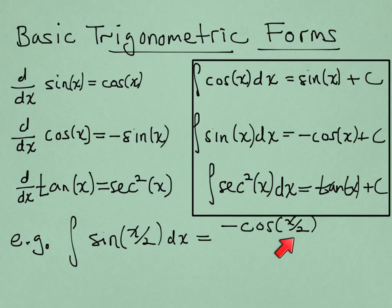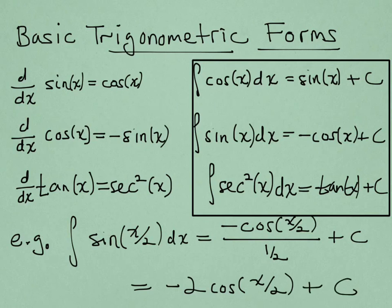Moreover, because I have x over 2 inside, the chain rule would say I need a factor of 1 half when I differentiate. I don't want that because there's no factor of 1 half over here, so I'm going to cancel it out by dividing by 1 half. Let's simplify that now. If I divide by 1 half, I'm really multiplying by 2, so it's minus 2 cosine of x over 2 plus c.